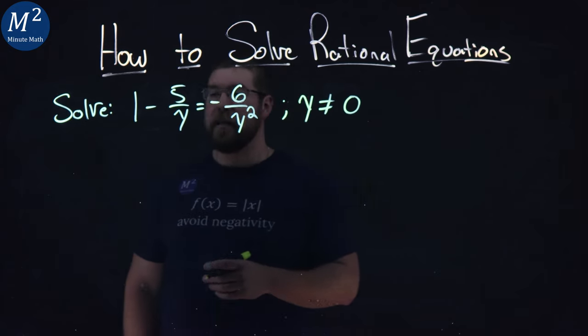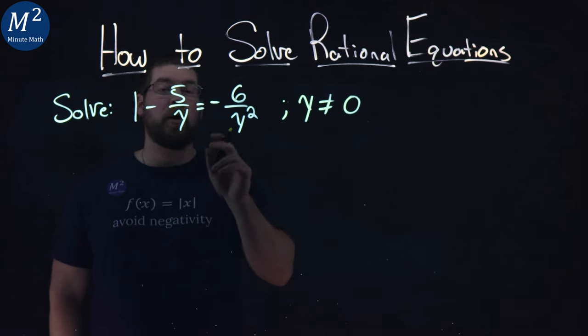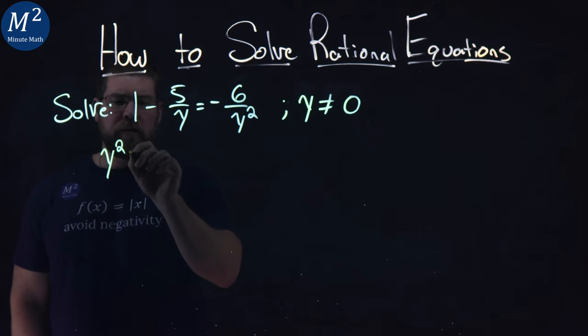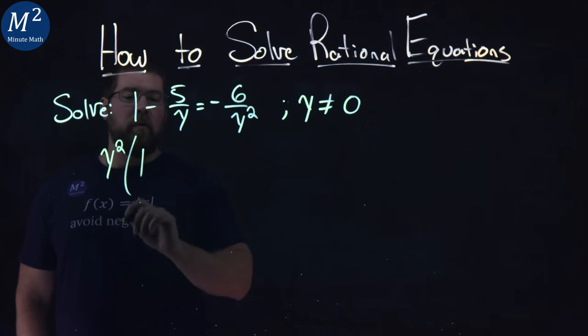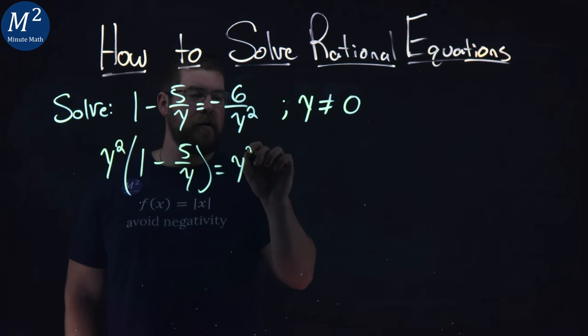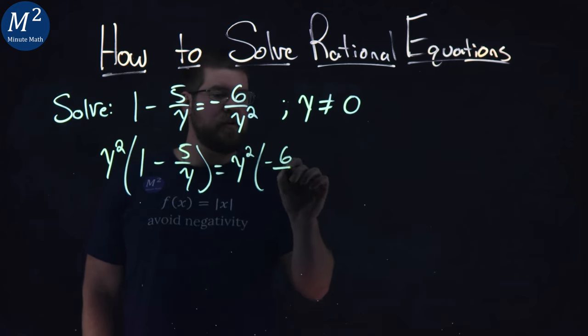So what I'm going to do is take that and multiply all parts by that y squared, both sides of the equation. So I have y squared here, that least common denominator, 1 minus 5 over y equals y squared times negative 6 over y squared.